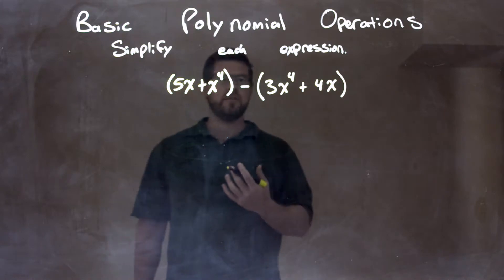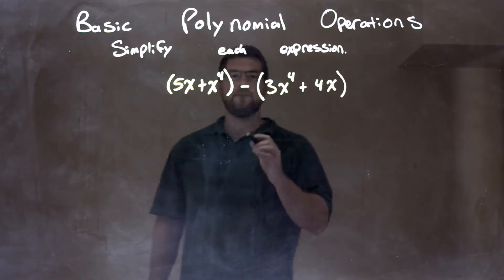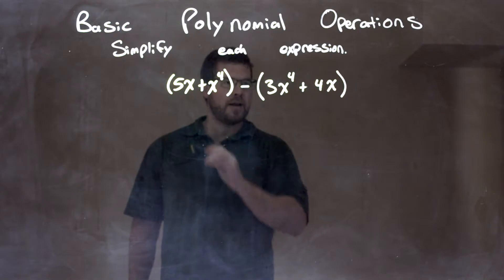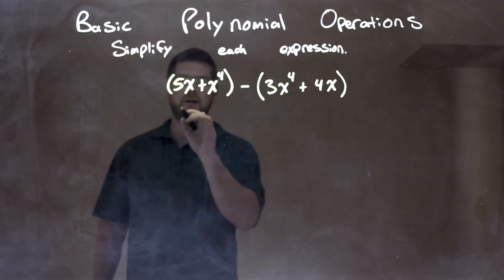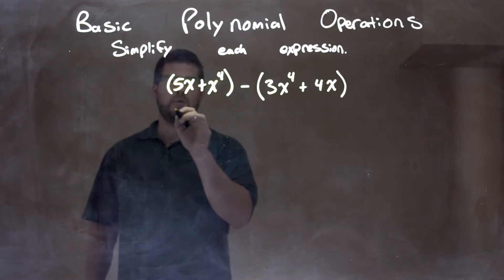So then what I need to do is I'm going to rearrange my like terms. Now, before I do that, I see this minus sign, and this is what I like to do. I like to distribute that minus sign around. When there's no like terms in here, I don't need the parenthesis anymore.